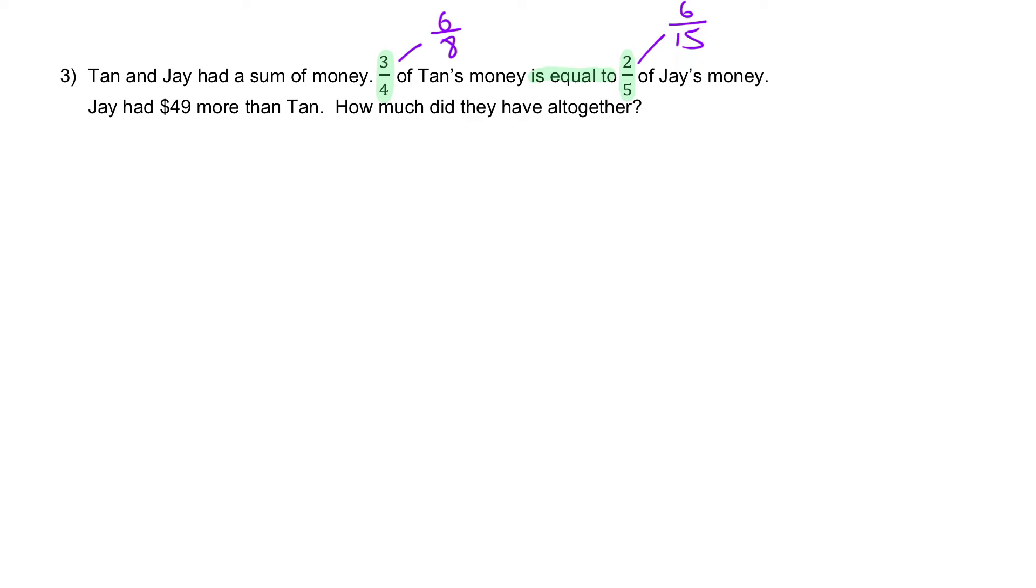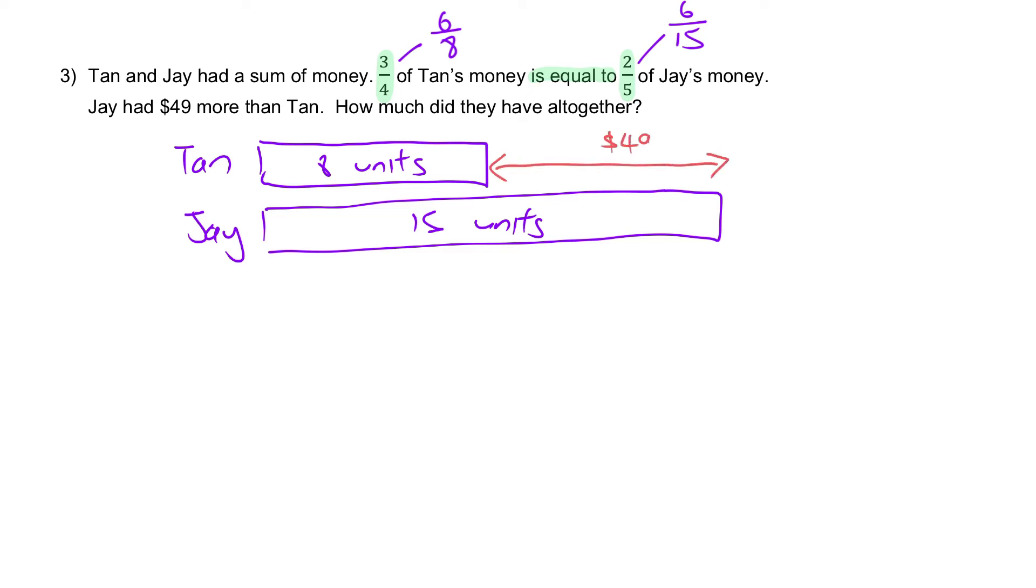Step three: their denominator represents their own total. Hence, Tan, I'm not going to cut it out, I'm just going to do a very simple model. Tan has eight units, Jay has fifteen units, something like this.